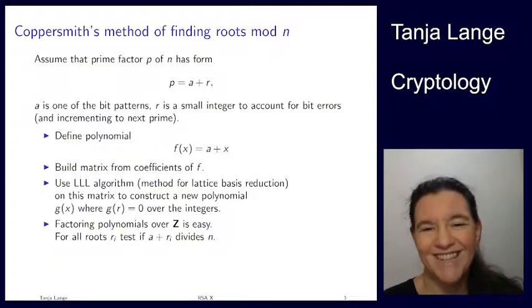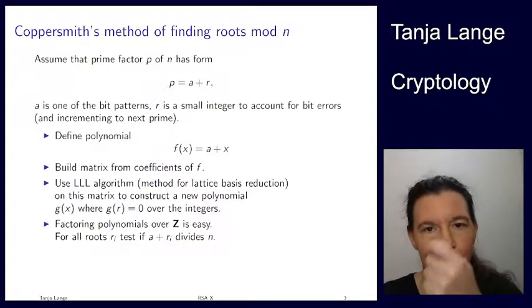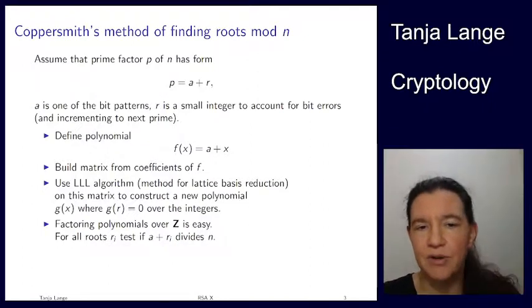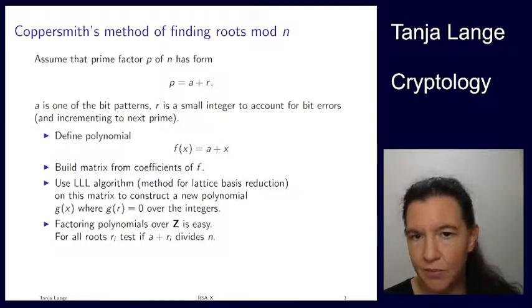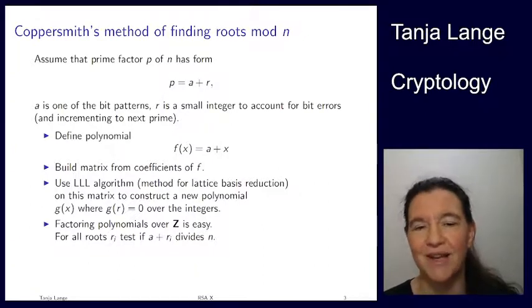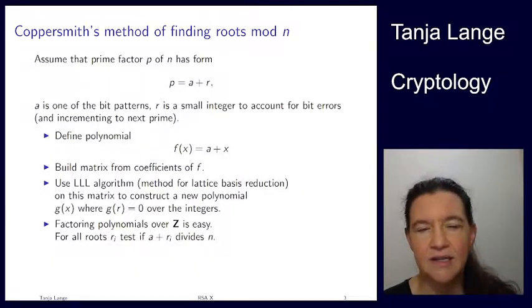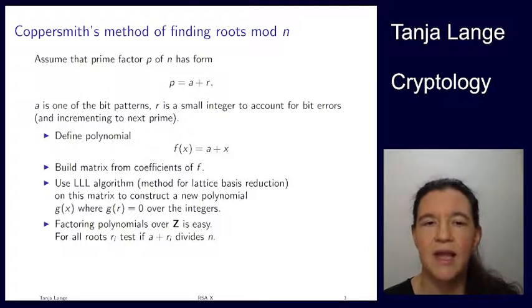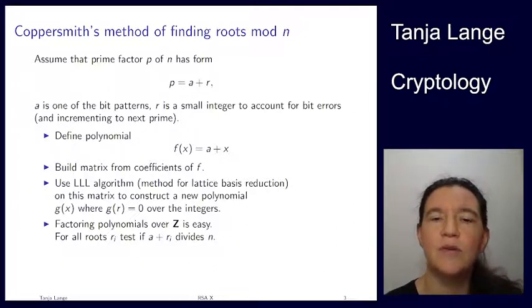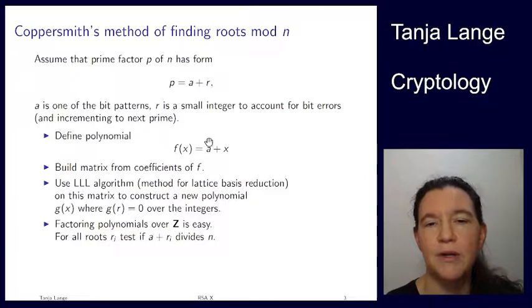The way the Coppersmith method is working is that we come up with such a polynomial. Here it is. a is our bit pattern, X is the one we define, and then we know that this polynomial has a solution mod p. Namely, it is equal to p at that point.